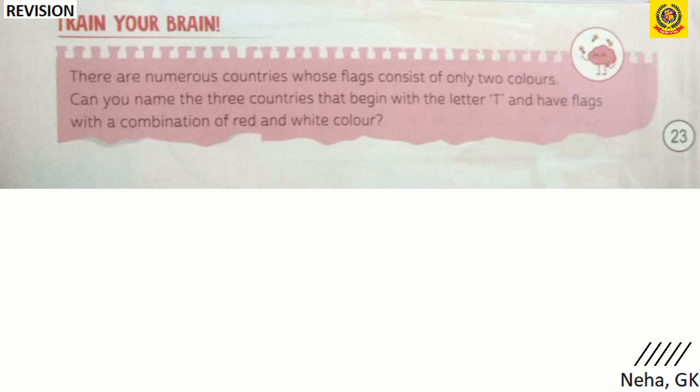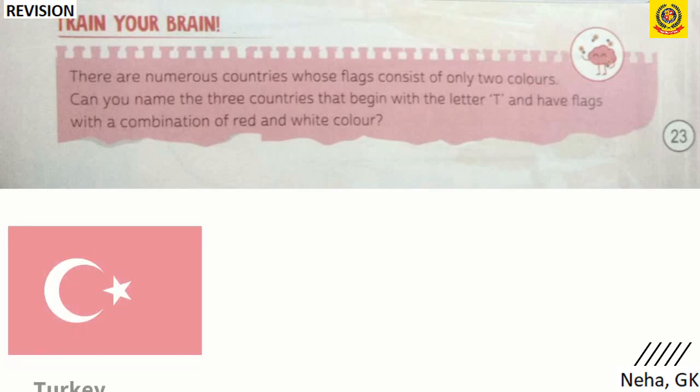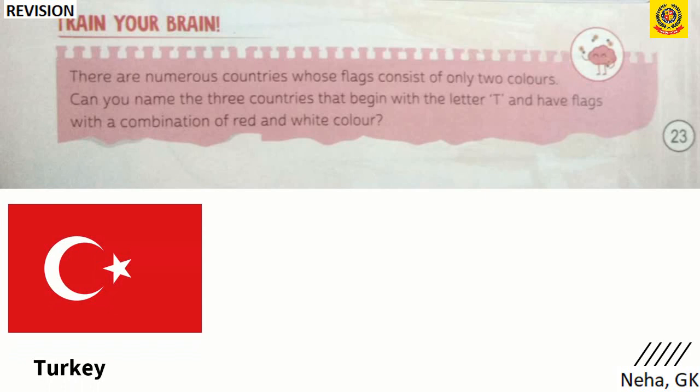Train Your Brain: There are numerous countries whose flags consist of only two colors. Can you name three countries that begin with the letter T and have flags with a combination of red and white? The first one is Turkey — the background is red and the moon and star are white.